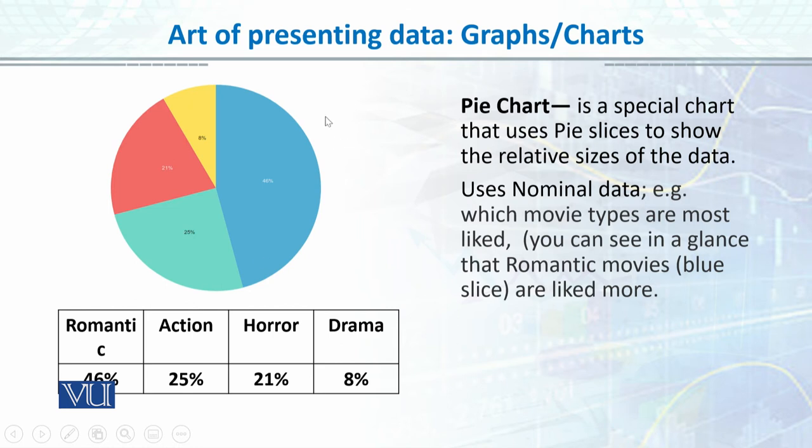Each slice of the pie represents a separate category. For example, I collected data from students in my class asking which movies they watch. I asked their preference across four different types of movies: romantic, action, horror, and drama. I calculated the percentage for each type of movie preference.